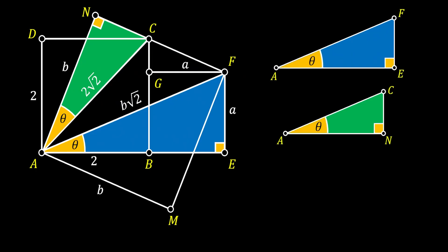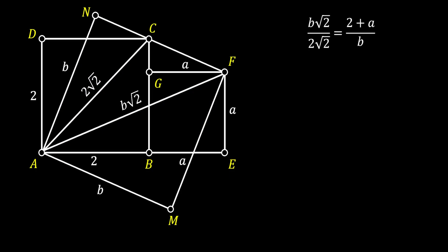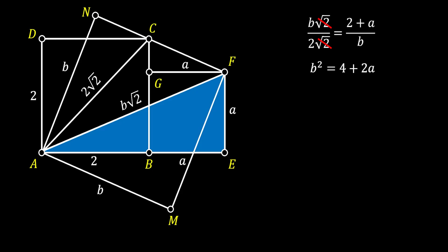You can notice that those two triangles share two pairs of the same angles, which means they are similar. Now let's pull the values for their sides from the sketch. The length B, E is equal to the side of our smaller square, which means the base of our blue triangle must be equal to 2 plus A. Using the rule of similarity, the relation between the hypotenuses equals the relation between the bases of our two triangles. We can also apply the Pythagorean theorem to triangle A, E, F: the hypotenuse A, F squared equals A, E squared plus E, F squared.